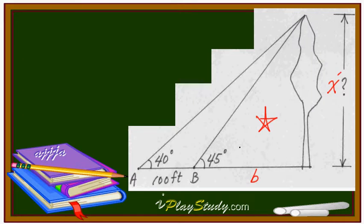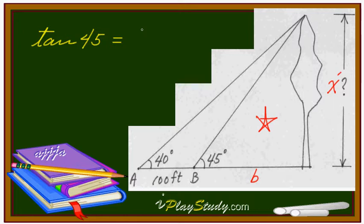For the height and the base, we can use tangent. Tangent of 45 degrees equals — using SOH-CAH-TOA — tangent means opposite over adjacent, so that's X over B. Tangent 45 is a well-known value: it equals 1. So we have X over B equals 1.